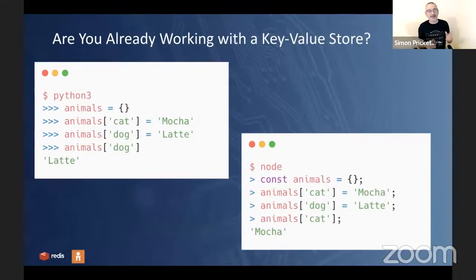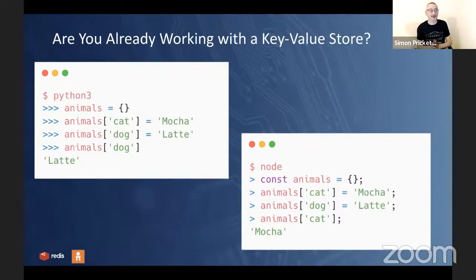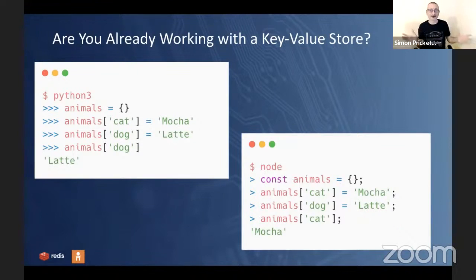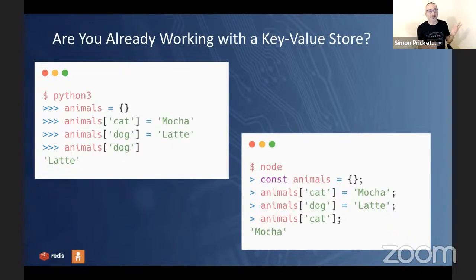Even if you're not working with a key-value database product, you're probably working with something that looks like a key-value store already. If you're a Python programmer and you've used dictionaries, or a JavaScript programmer using objects, both are associative arrays — which is essentially what Redis is: a big associative array associating names with values.